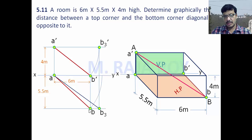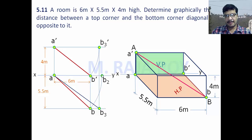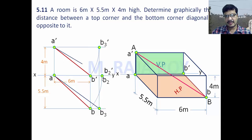Now if you start drawing from the top view and rotate it, you get B two. From B two, draw a projector onto the locus of the front view. Since B dash already represents the locus of the front view, B two and B two dash lie at the same place. The line joining A dash and B two dash again gives the true length. This line length remains the same — it is equal to the distance between A and B.